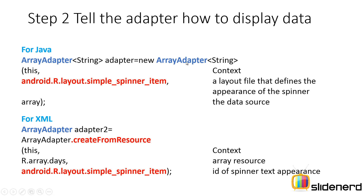For XML, things differ slightly. Instead of new ArrayAdapter, you use a static method called createFromResource. This also takes three parameters: one, the context; two, the array resource; and three, the appearance of a single item inside the drop-down list of a spinner, which is contained inside a layout file. I will show you exactly how this file looks.